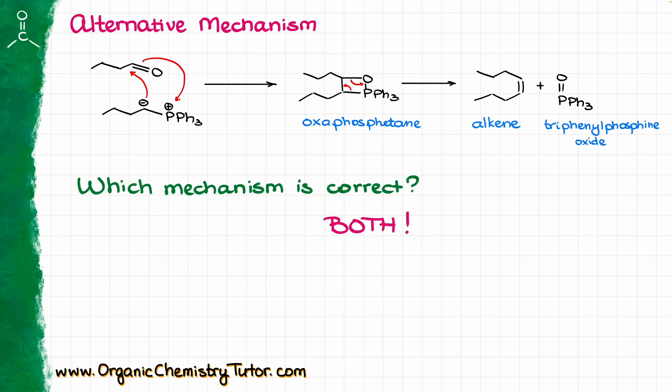In sophomore organic chemistry, instructors typically give you one version or the other, and that's what they will expect on the exam. Pay attention to what your instructor does in class and go with that mechanism. If your instructor draws the betaine, draw the betaine. If your instructor bypasses the betaine and draws the oxaphosphetane right away, do the mechanism like that — because ultimately it's your instructor who is going to be giving you the final grade.